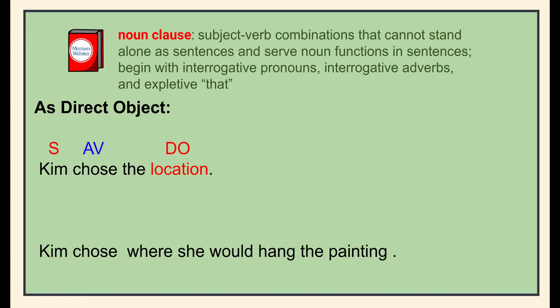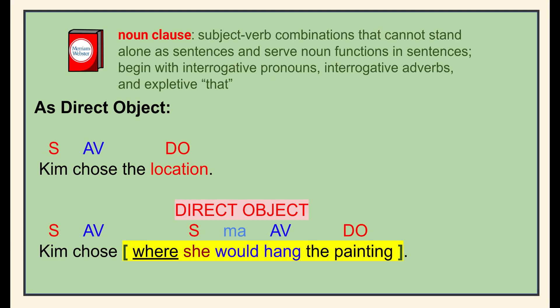When you locate an action verb and its subject, ask who or what is receiving the action of the verb to find direct objects. In the first sentence, what was chosen? The location — which is the direct object. In the second sentence, the verb phrase is 'would hang' and its subject is 'she.' The interrogative adverb 'where' introduces the dependent clause. Asking what was chosen leads to the dependent clause 'where she would hang the painting,' which functions as the direct object of the verb 'chose,' just as the single word 'location' does in the first sentence.